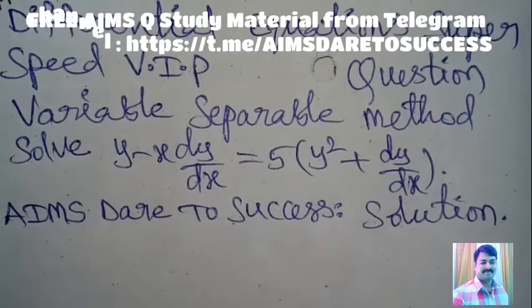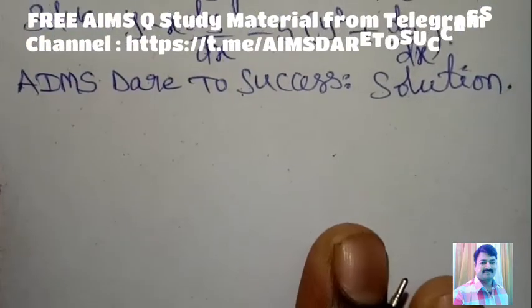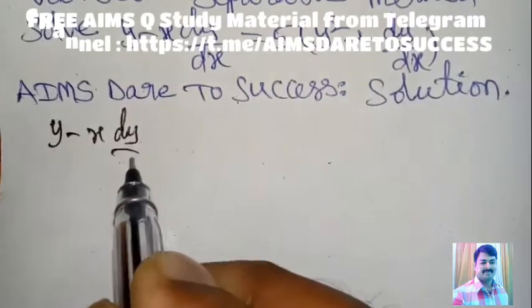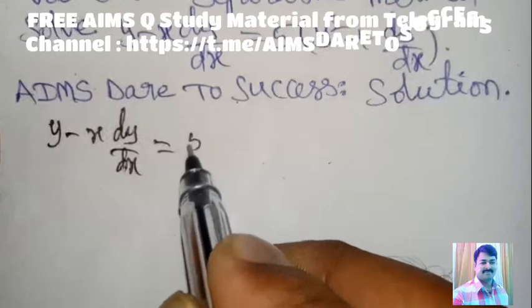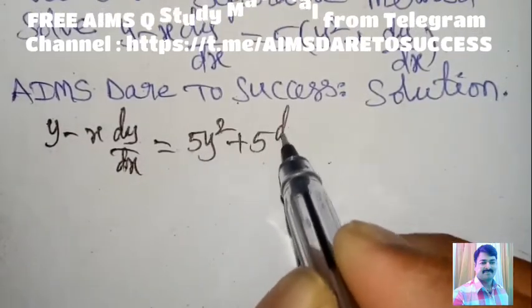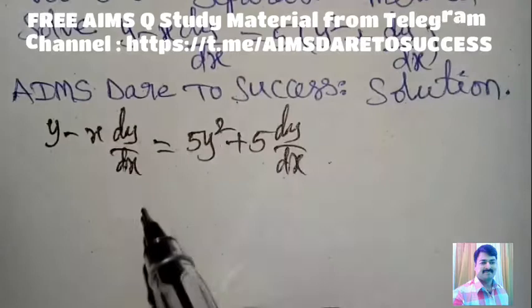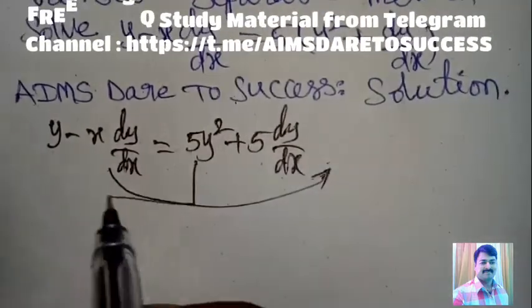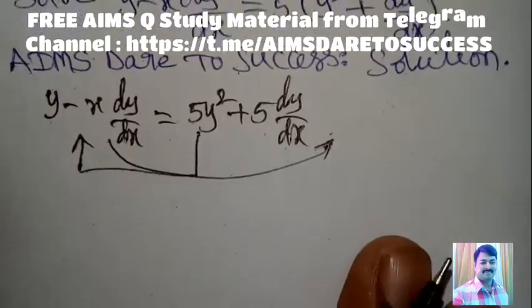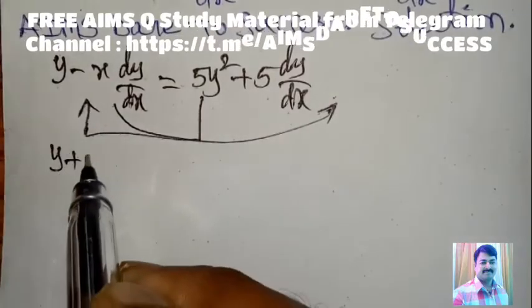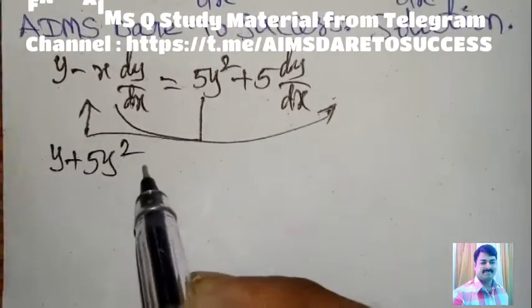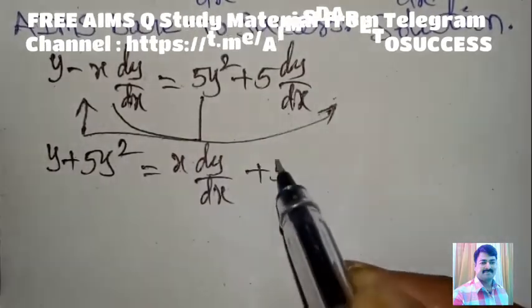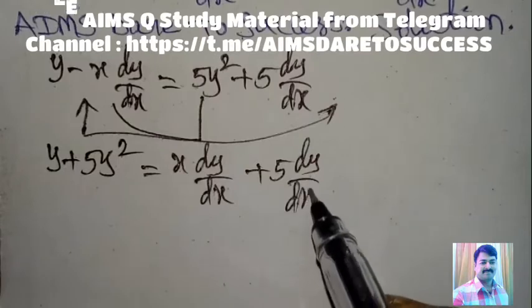Now the given equation is y minus x(dy/dx) = 5(y² + dy/dx). Multiplying inside we get 5y² + 5(dy/dx). Rearranging, minus x(dy/dx) comes to the right side, so y + 5y² equals minus x(dy/dx) plus x(dy/dx) plus 5(dy/dx).